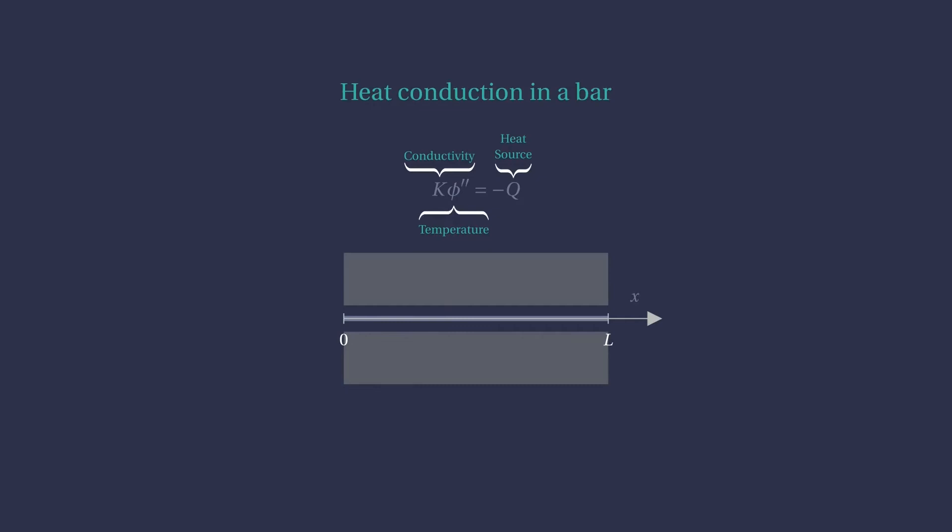With the tools we have found so far, we can start solving some problems. Consider the equation describing heat conduction through a rod of length L, thermally isolated from the sides, with thermal conductivity k and an internal heat source q per unit length. The temperature is denoted by phi. The temperature at the end points of the rod is fixed.